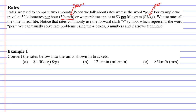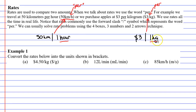Rates are used to compare two amounts. So let's look at 50 kilometers an hour — we are comparing the amount of 50 kilometers with one hour of time. When we look at $3 per kilogram, we are comparing $3 with the amount of one kilogram. You will notice that the units on the right side of the forward slash both have an amount of only one: one hour and one kilogram. And if you can remember that, this is the key to working with rates.